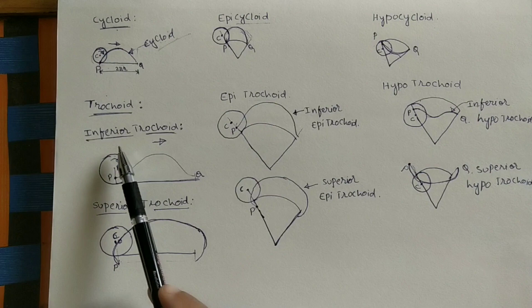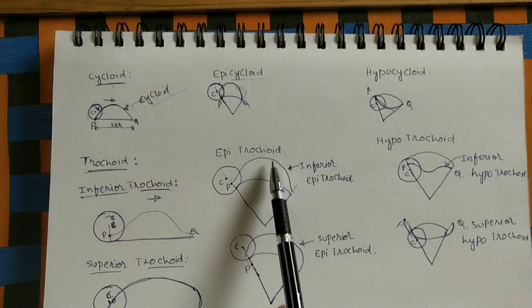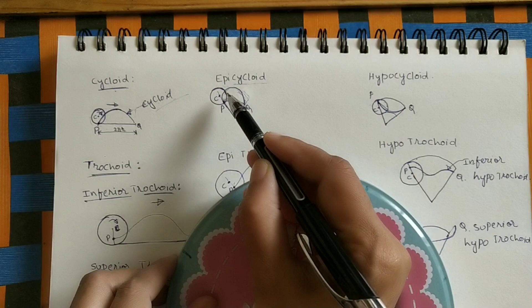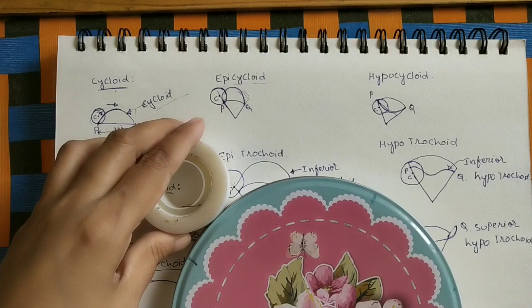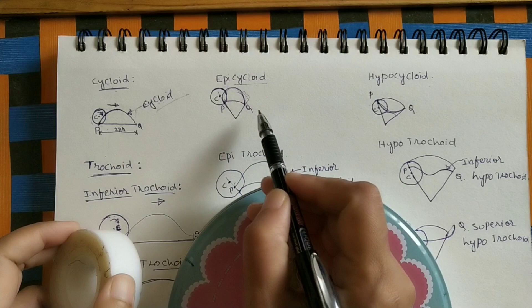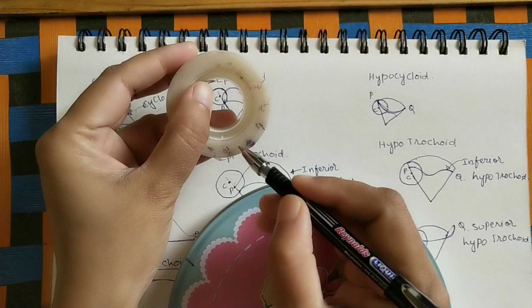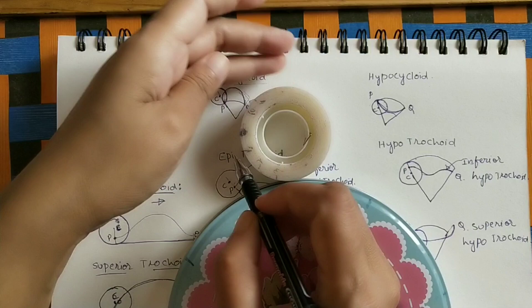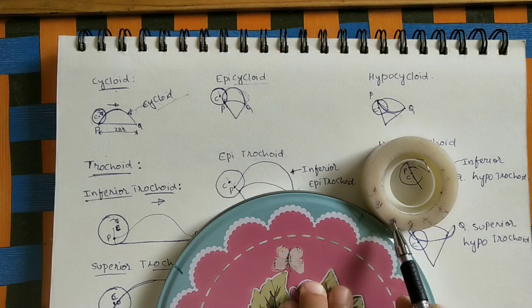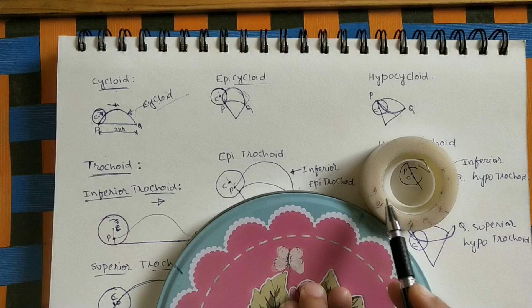Epitrochoid is also similar to epicycloid. Epicycloid means on the curved surface. On this curved surface one circle is rolling and moving in this direction. So here if it is rolling on the curved surface, the path of this P point — P is on the circumference of the circle — if you mark all P points for one complete revolution of the circle and join them, we will get the curve. This path is called epicycloid.